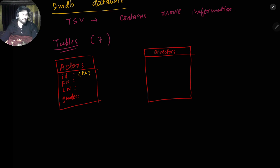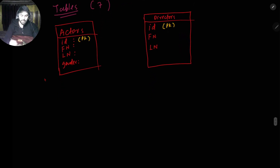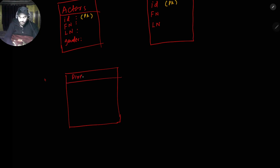The directors table — what are the things in it? The first is id, which identifies each director uniquely, then first name and last name. Here the id is the primary key. Then we'll have another table called director_genres. Genre basically means what domain the director makes movies in — it can be comedy, action, adventure, sci-fi, or something like that.